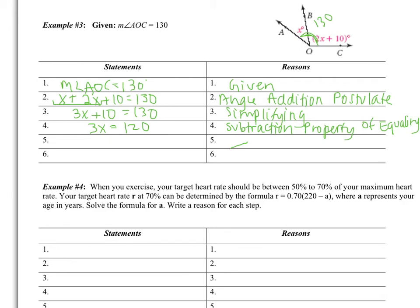Then dividing by 3, I end up with X equals 40. That's the division property of equality. And that's it — we're finished with the proof.